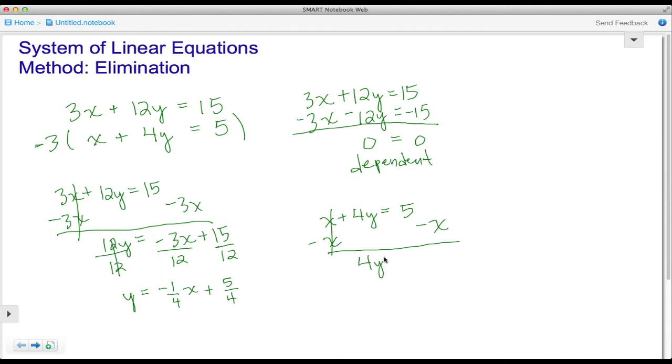Then let's divide each term by 4 to get y by itself. Here we have y = -1/4 x + 5/4.